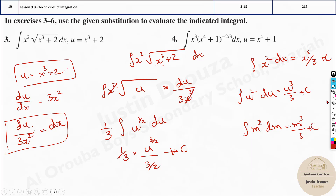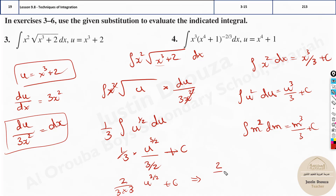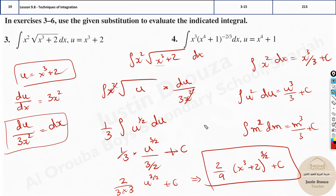The answer we obtain is 2/9. Another way to understand it: the first denominator stays, then 3/2 flips up giving 2/3, times 1/3, which is 2/9 — matching the calculator. So the final answer is (2/9) u to the power 3/2 plus c. Now substitute back: u was x cubed plus 2, so the answer is (2/9)(x³ + 2)^(3/2) plus c.